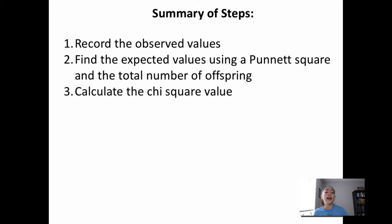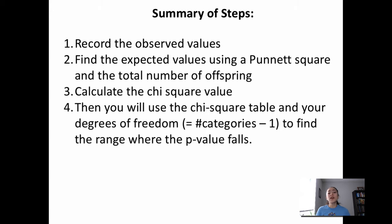Third, you're going to calculate the chi-square value by filling out the table. Then, you will use a chi-square table and your degrees of freedom, which equals the number of categories minus 1, to find the range where your p-value falls.